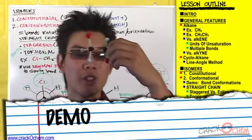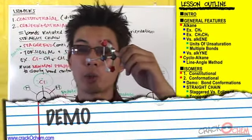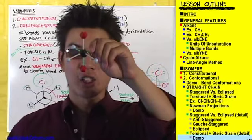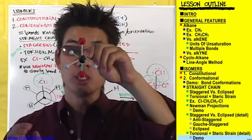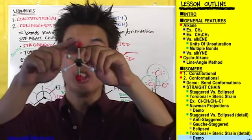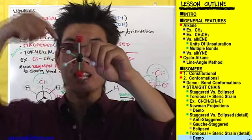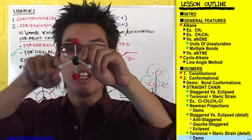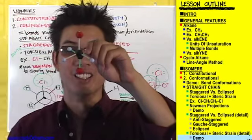Let's take our model that we built earlier. This model right now is in the anti-staggered conformation. If you look closely, you'll see that the two red chlorines are pointing in completely opposite directions and are 180 degrees apart from one another.